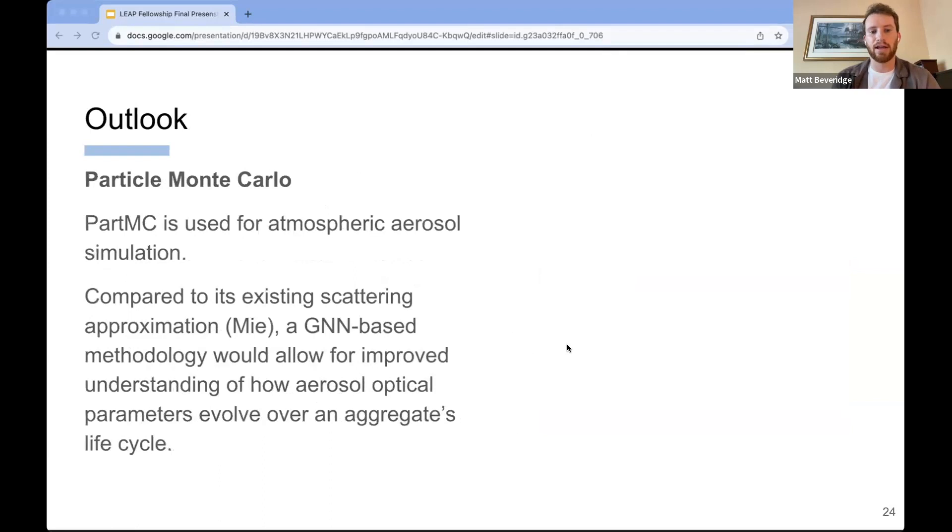We have two potential forward avenues with this work. I mentioned earlier that there is difficulty in modeling the life cycle of the aggregates in the atmosphere. One method of doing that is called PartMC. It is a simulation for atmospheric aerosols. Within this, there is a Mie scattering theory approximation used for the prediction of the optical parameters. One thing that would be an improvement to this type of simulation would be using a method like this which simulates a more complex solution to the optical parameters as a way to better model the life cycle of black carbon.